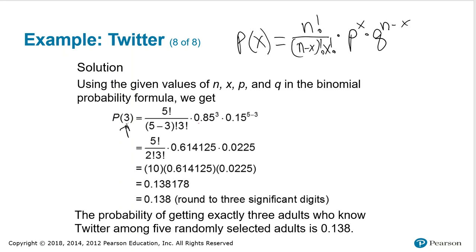Plugging those values in from the previous slide, we have x is three, n was five, little p is .85, little q is .15, and as I mentioned, this number in the front is the number of items, the number of arrangements of taking three out of five items.